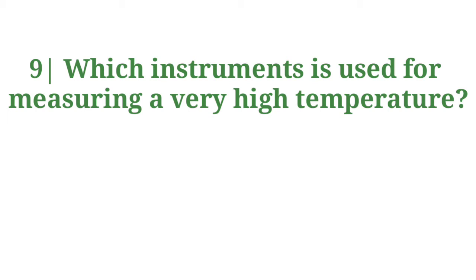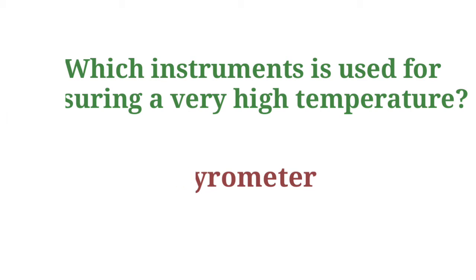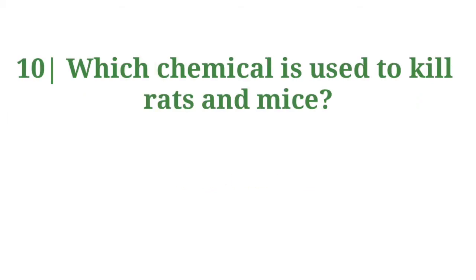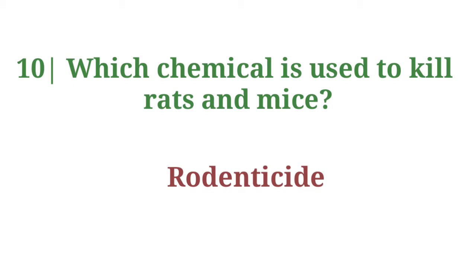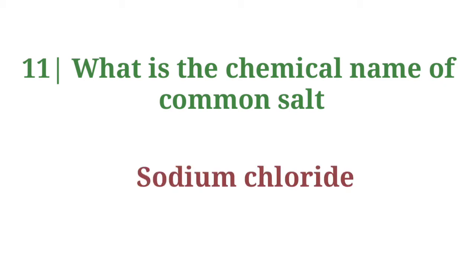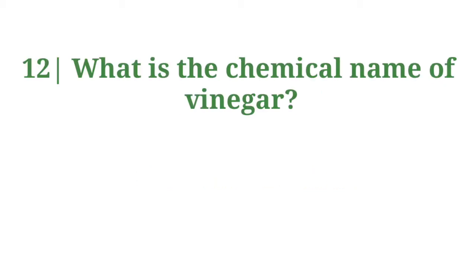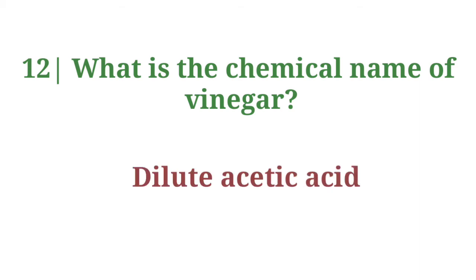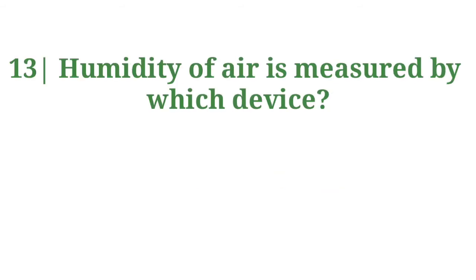Which instrument is used for measuring very high temperatures? Answer: Pyrometer. Which chemical is used to kill rats and mice as a rodenticide? What is the chemical name of common salt? Answer: Sodium chloride. What is the chemical name of vinegar? Answer: Dilute acetic acid. Humidity of air is measured by which device? Answer: Hygrometer.